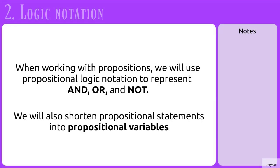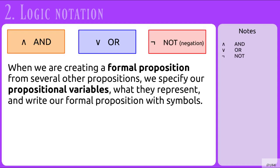Now that we've talked about propositions, we should learn how to write them symbolically. When working with propositions, we will use propositional logic notation to represent AND, OR, and NOT. We will also shorten our propositional statements into propositional variables. For AND, we have a symbol that looks like an A without the middle line. For OR, it looks like a V. And for NOT, we use the negation symbol — it looks like a sideways backwards L. When creating a formal proposition, we'll specify our propositional variables, what they represent, and write our formal proposition with the symbols.